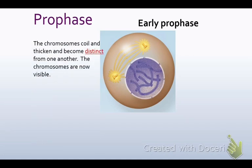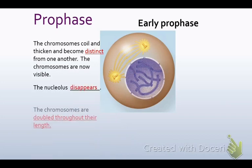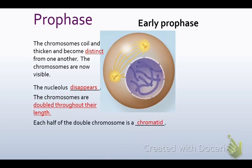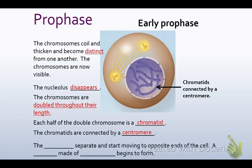In early prophase, the chromosomes coil and thicken, and they become distinct from one another — now visible under the microscope. The nucleolus disappears, and the chromosomes are doubled throughout their length, so there are now two copies of everything. Each half of the double chromosome is called a chromatid, and the chromatids are connected by a centromere.